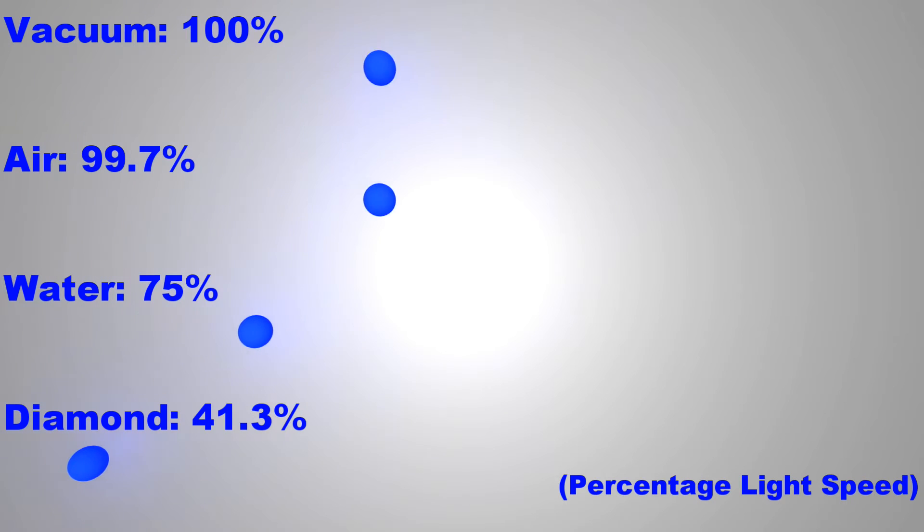In air, light is actually slightly slower, in water even more so, and in diamond, light can move at 40% of its regular speed.